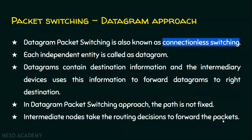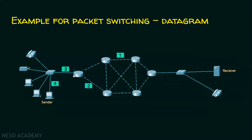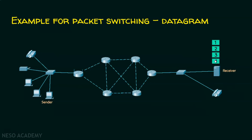In the datagram example, the sender's message is broken into four datagrams. Datagram 1 takes one path, datagram 2 takes a different route, and datagram 4 arrives before datagram 3. The order received is 1, 2, 4, 3. The receiver reorders them using sequence numbers and reconstructs the original message as sent by the sender.